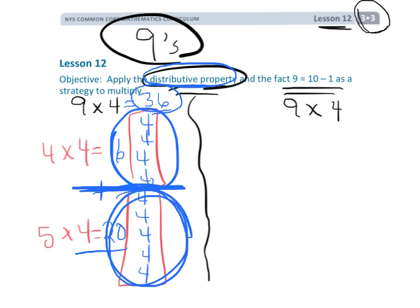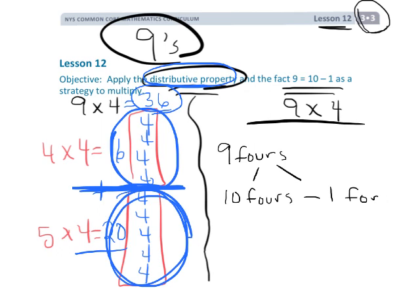Now, the other idea is you can say, well, 9 is 1 less than 10. So over here, we could say instead of 9, well, we could say we have 9 fours, and 9 fours is really 10 fours minus 1 four.